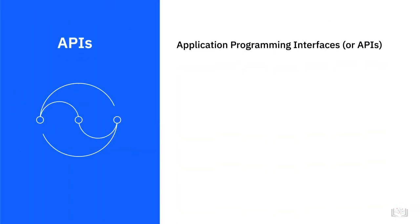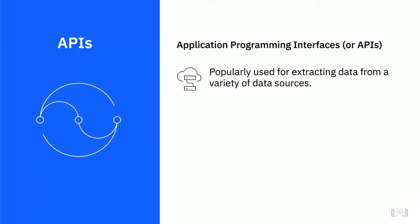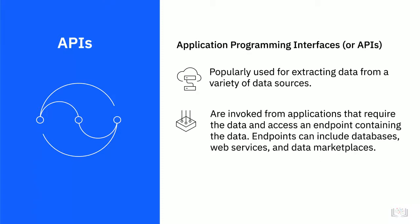Application Programming Interfaces, or APIs, are also popularly used for extracting data from a variety of data sources. APIs are invoked from applications that require the data, and access an endpoint containing the data. Endpoints can include databases, web services, and data marketplaces. APIs are also used for data validation — for example, a data analyst may use an API to validate postal addresses and zip codes.